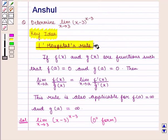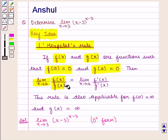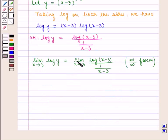According to L'Hôpital's rule, since limit x tends to 3 of log of x minus 3 upon 1 upon x minus 3 takes the infinity by infinity form, we apply L'Hôpital's rule. Therefore, limit x tends to 3 of log of y equals limit x tends to 3 of the derivative of log of x minus 3 with respect to x, upon the derivative of 1 upon x minus 3 with respect to x.